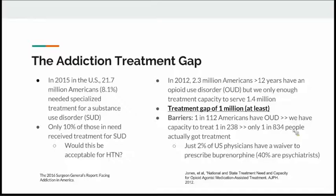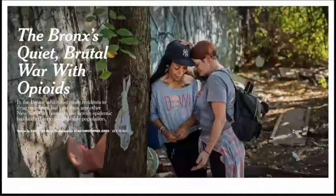In addition to insufficient capacity, there are major barriers to access to treatment. While only 1 in 112 Americans have opioid use disorder, we only have capacity to treat 1 in 200, and only 1 in 800 people actually got treatment. Only 2% of U.S. physicians have a waiver to prescribe buprenorphine—you do need specialized training—and about 40% of that 2% are psychiatrists, with around 30% being family medicine and internal medicine physicians.